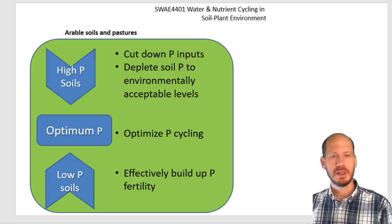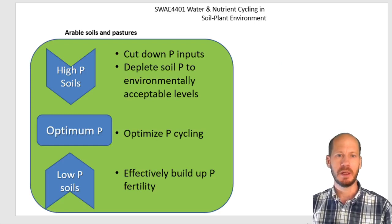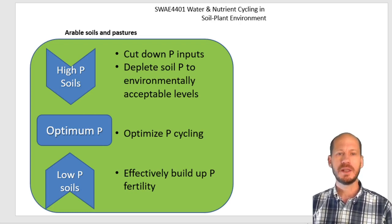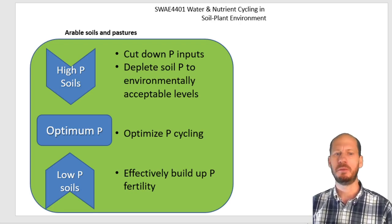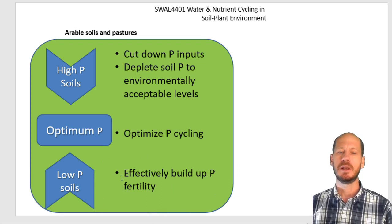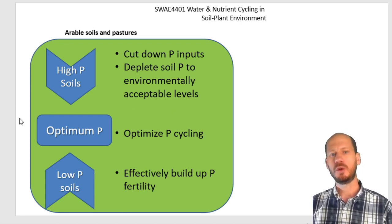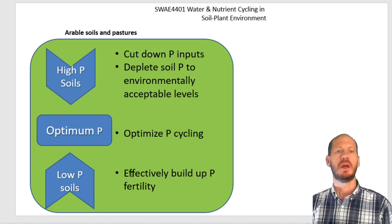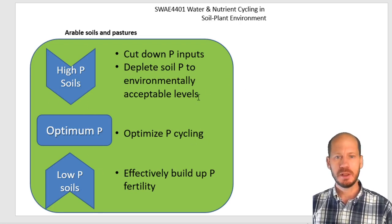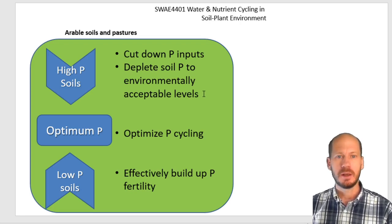When you measure phosphorus bioavailability, you get a value representing the status of your soil. Is it high? Is it low? Or is it in a range considered optimum for plants? If you have low phosphorus, you need to build up soil fertility by adding phosphorus fertilizer. If you're in the optimum range, you don't need to do anything but optimize the phosphorus cycling to maintain those levels. When you have soils with excess phosphorus — which is the majority of cases in Oman — you need to think about nutrient pollution.